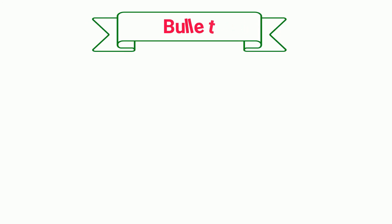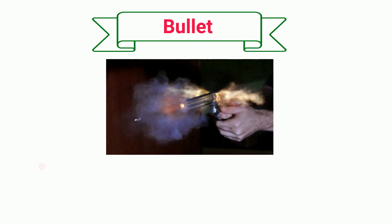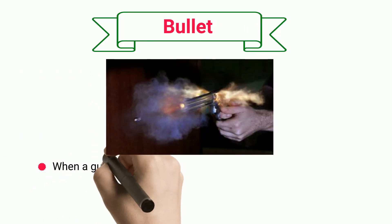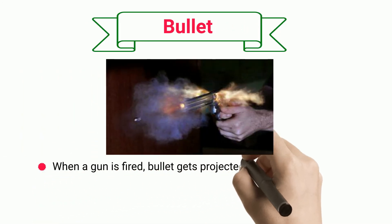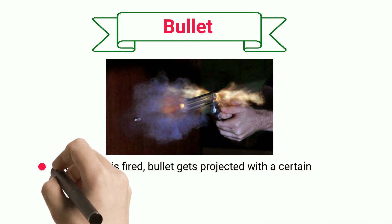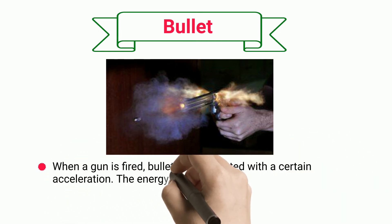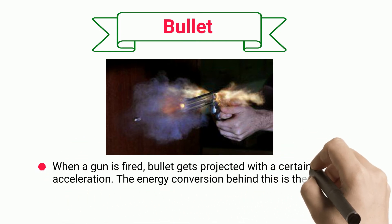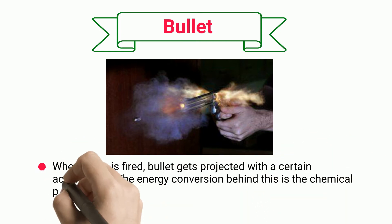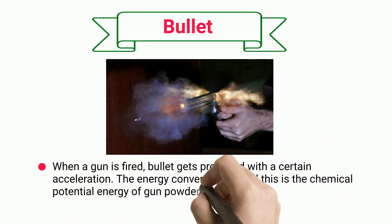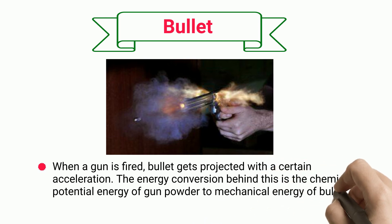When a gun is fired, the bullet gets projected with a certain acceleration. The energy conversion behind this is the chemical potential energy of gunpowder being converted to the mechanical energy of the bullet.